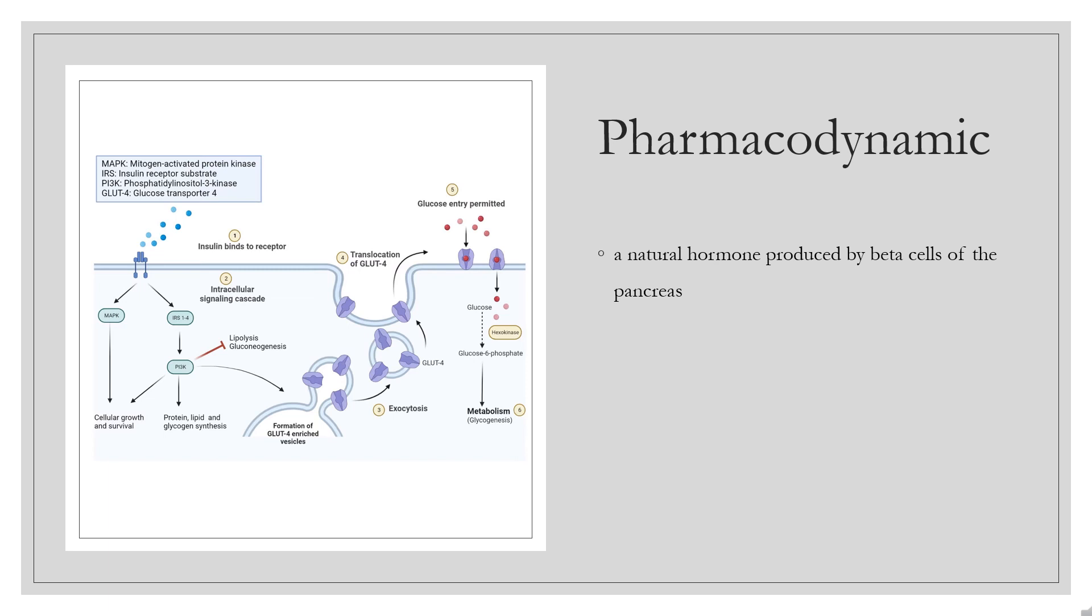Insulin promotes energy storage via glycogenesis, opposes catabolism of energy stores, increases DNA replication and protein synthesis by stimulating amino acid uptake by the liver, muscle, and adipose tissue, and modifies the activity of numerous enzymes involved in glycogen synthesis and glycolysis.